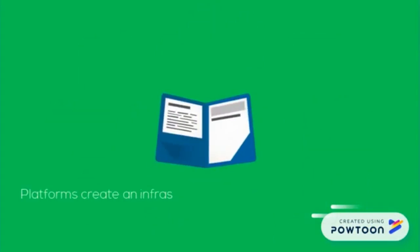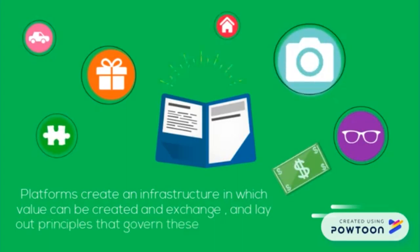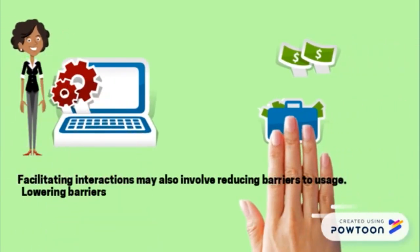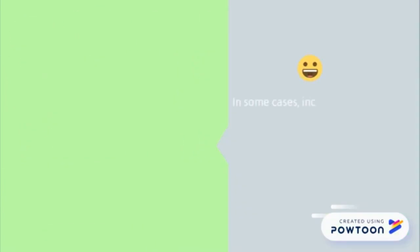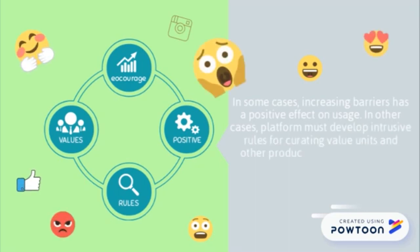Facilitate: platforms create an infrastructure in which value can be created and exchanged, and lay out principles that govern these interactions. Facilitating interactions means making it as easy as possible for producers to create and exchange valuable goods and services via the platform. Facilitating interactions may also involve reducing barriers to usage, though in some cases increasing barriers has a positive effect on usage. In other cases, platforms must develop rules for curating value units and other producer-created content in order to encourage desirable interactions and discourage undesirable ones.